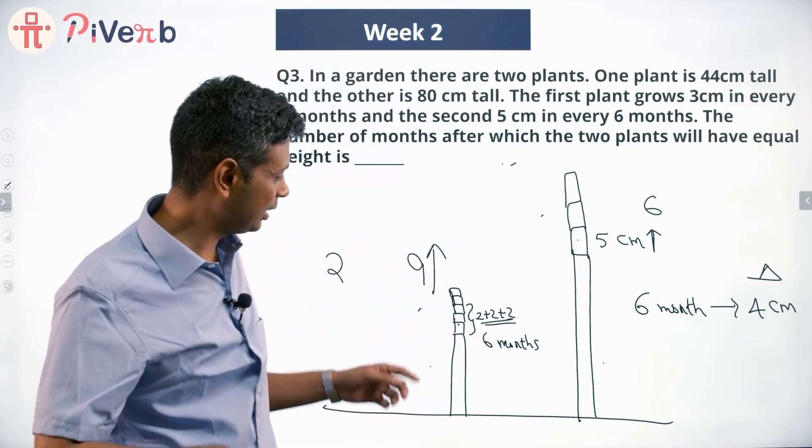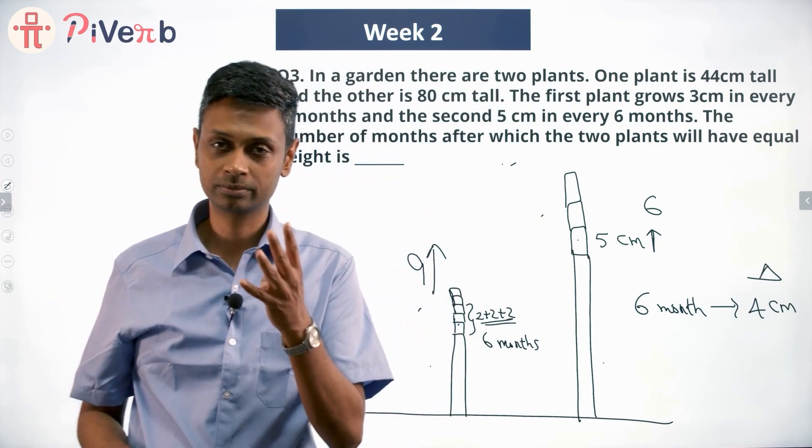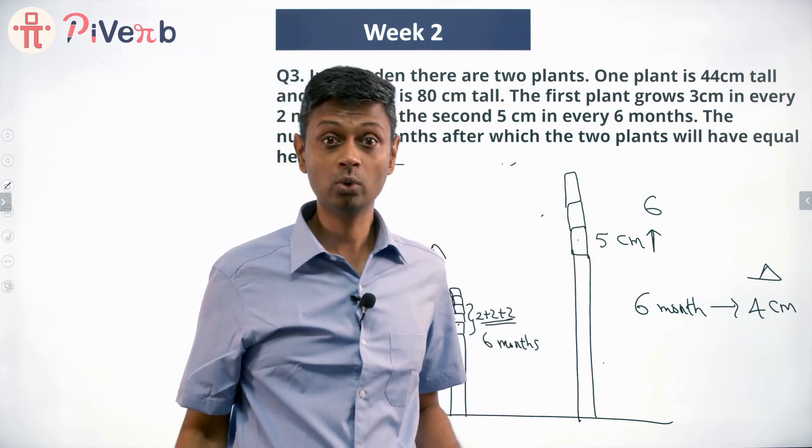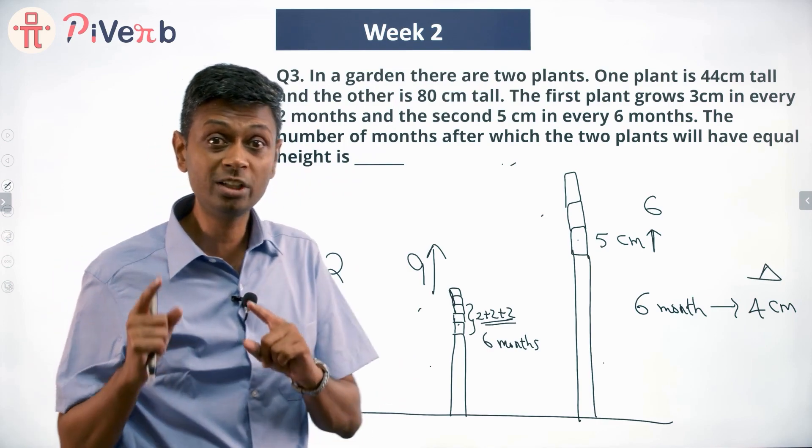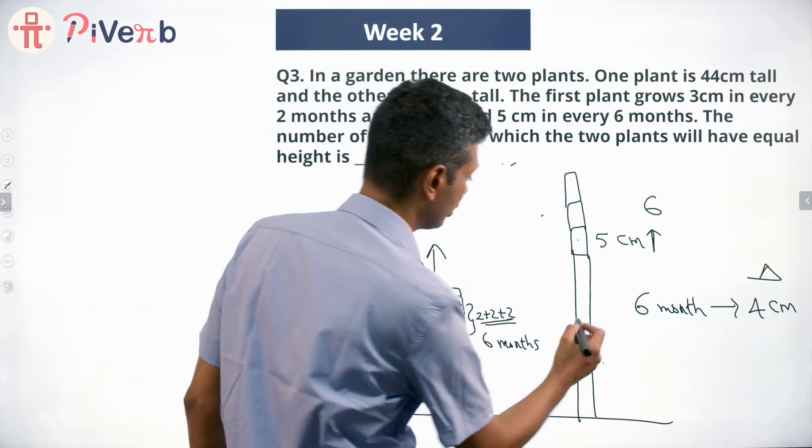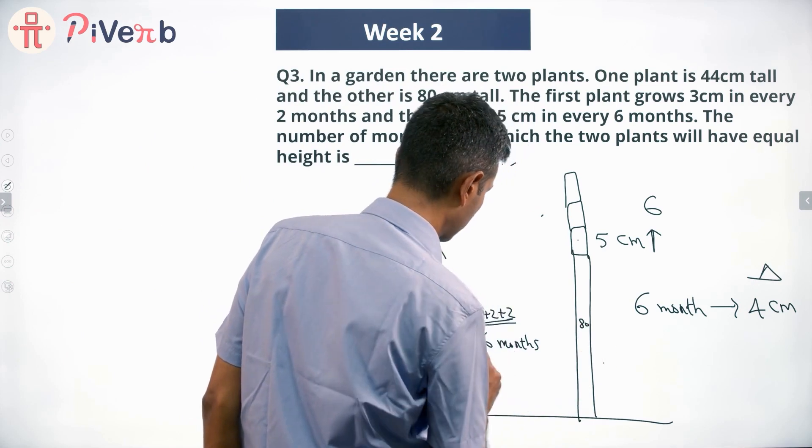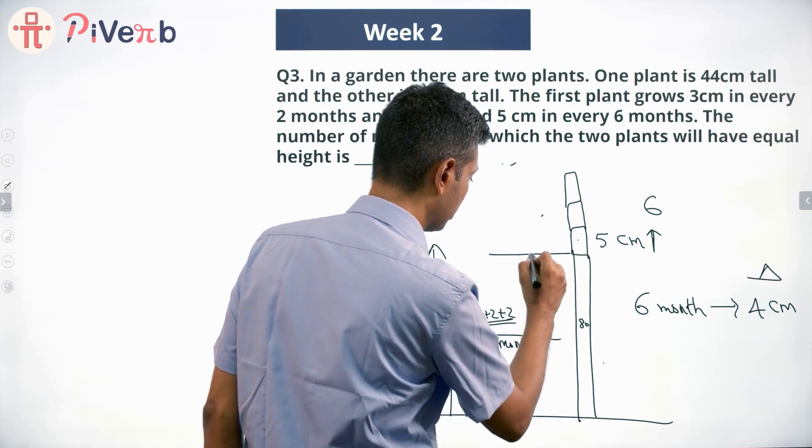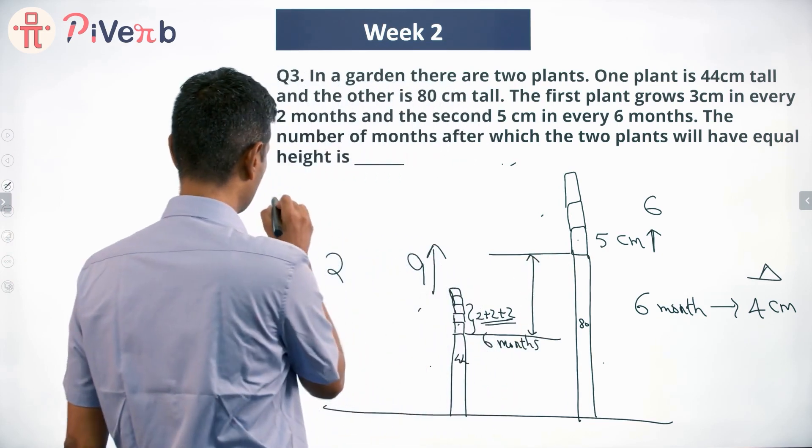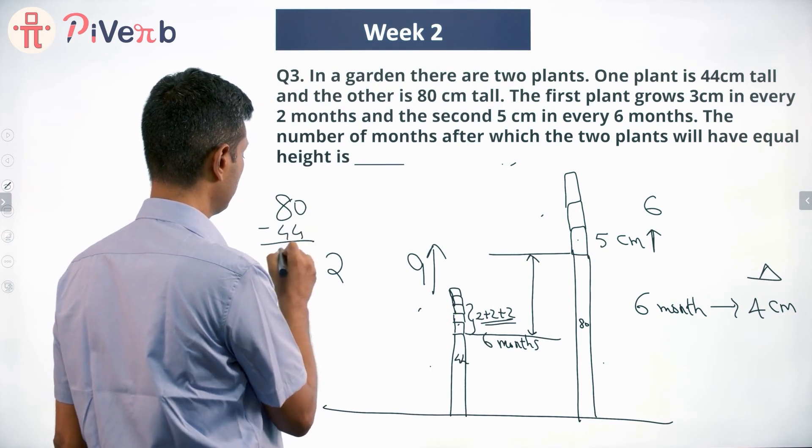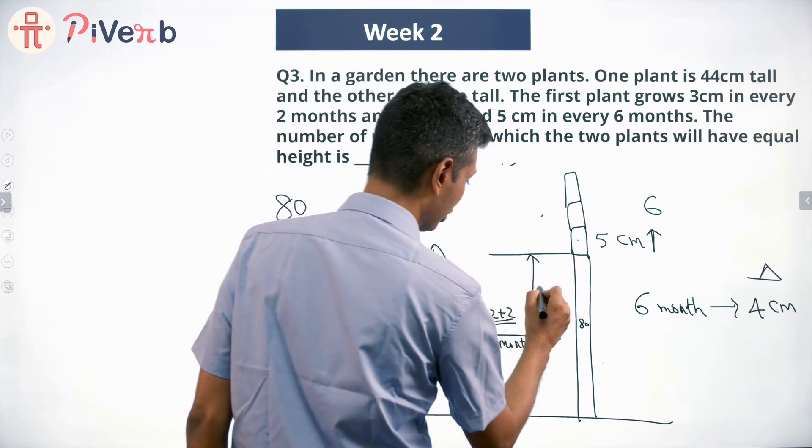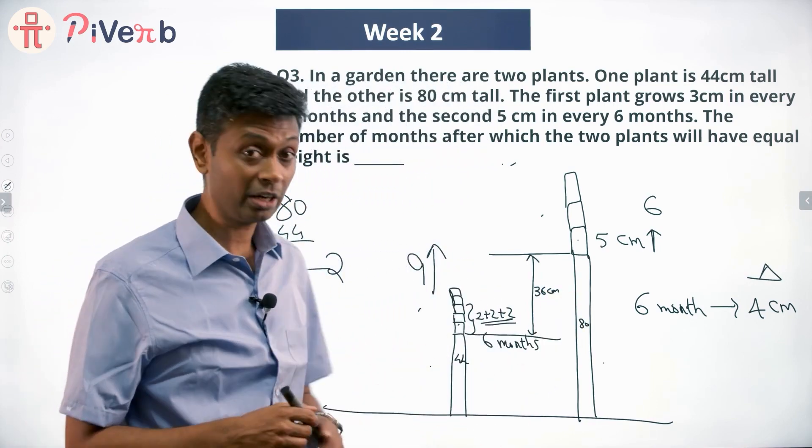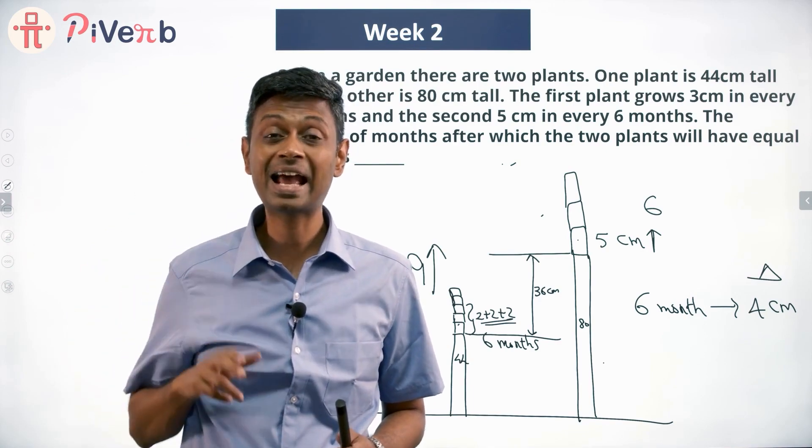So every 6 months this one gains 4 centimeters. Now I'm not going to worry about each step, I'm going to worry only about the difference between these two. The starting point here is 80, starting point here is 44. The difference between these two is 80 minus 44, which is 36 centimeters. This 36 centimeters, this shorter but faster growing plant has to catch up.